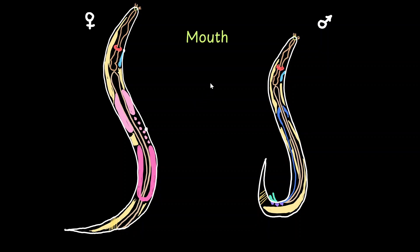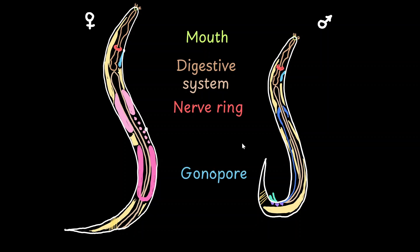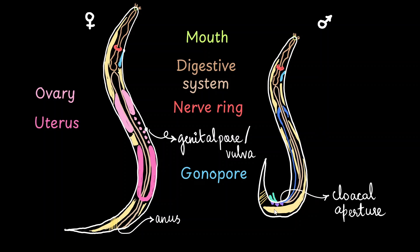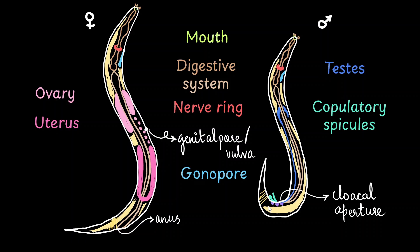Both worms have a mouth, a digestive system spanning from the mouth to the anus or cloaca, a nerve ring around the digestive system, as well as a gonopore. In the female, the digestive system ends in the anal pore, and on the ventral side they have the genital pore or vulva, which helps during mating and releasing offspring. The female ovaries release eggs that make their way into the uterus. The males have a cloacal aperture at the curved end, with testes and a pair of unequal chitinous copulatory spicules near the cloacal aperture that help in attaching to the female during reproduction.